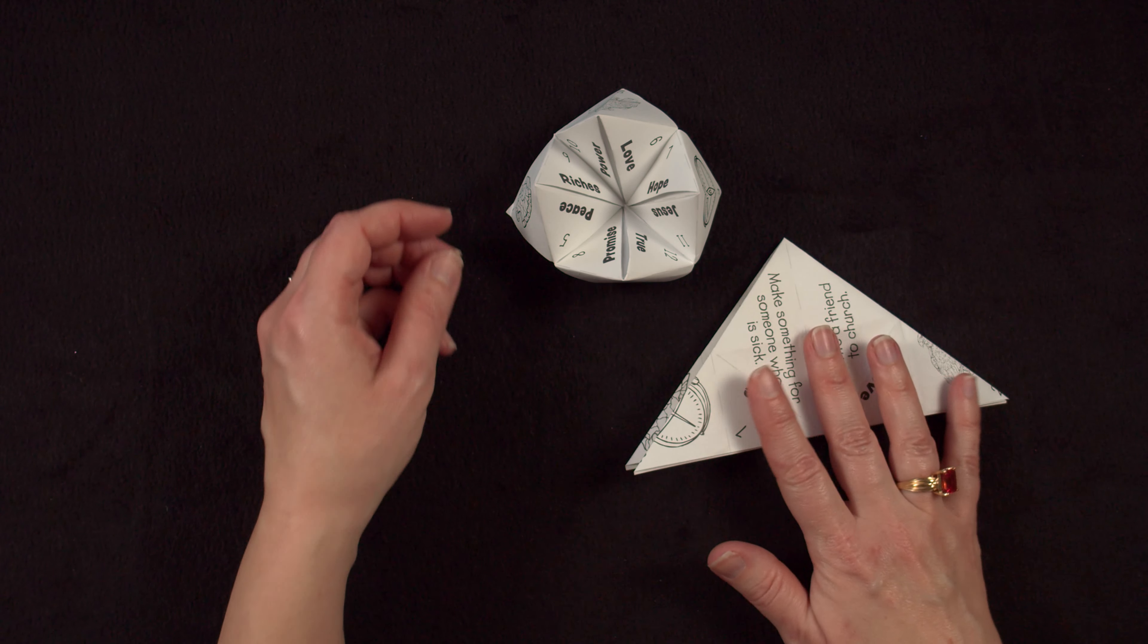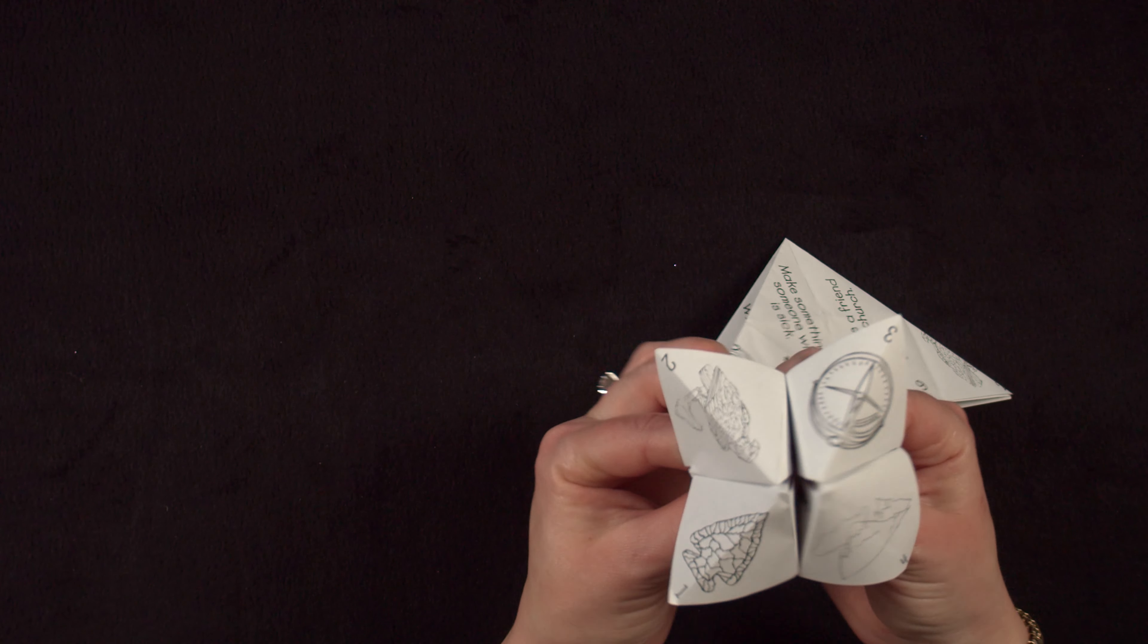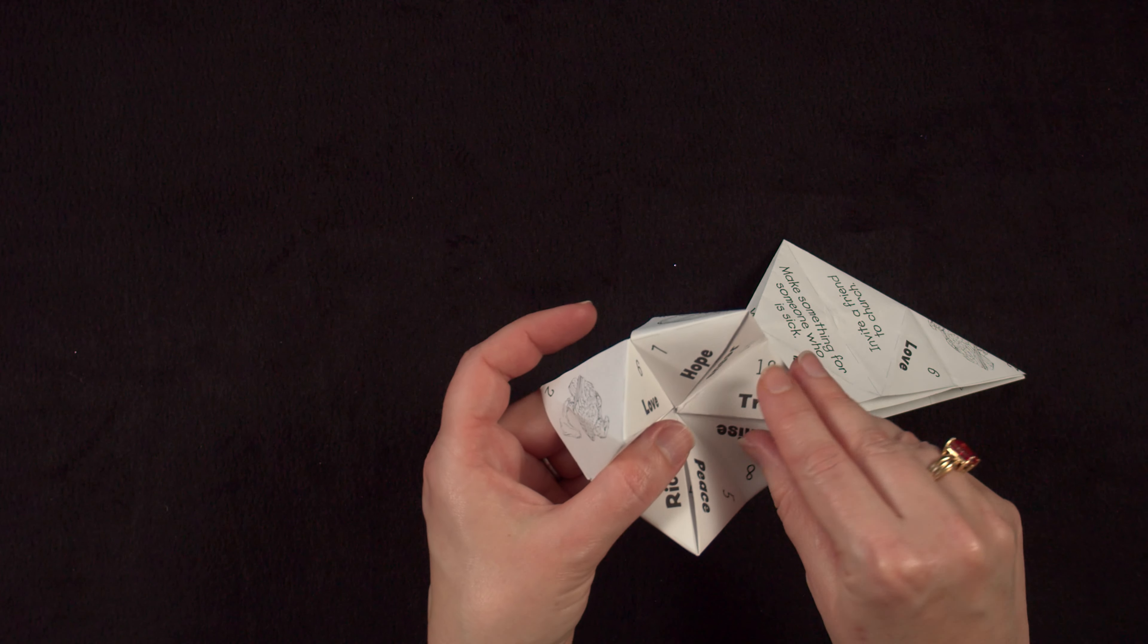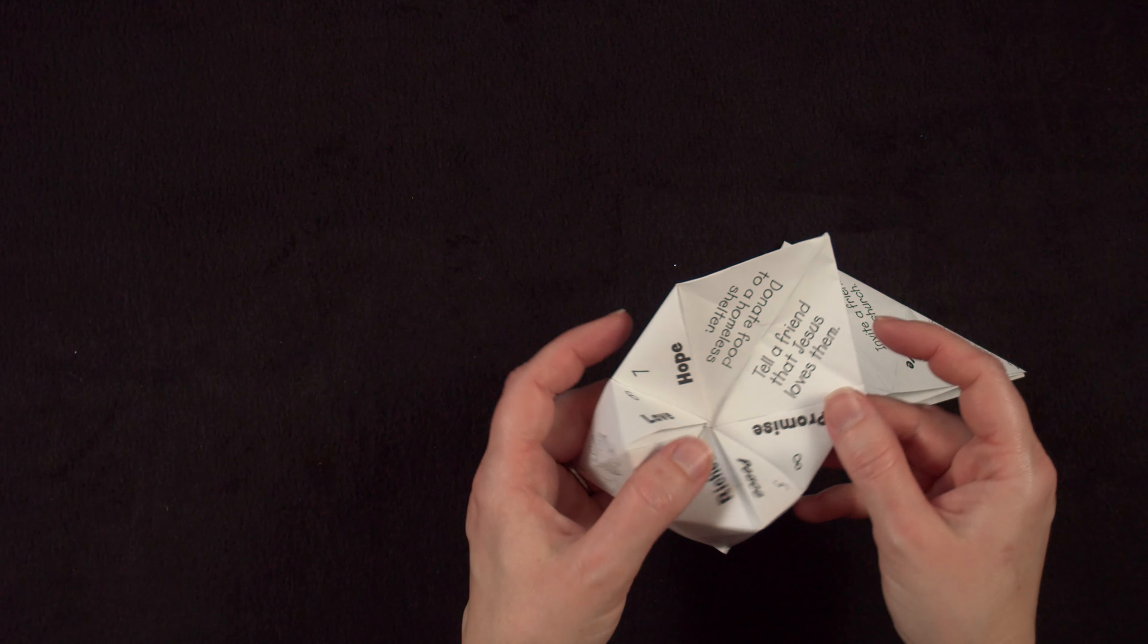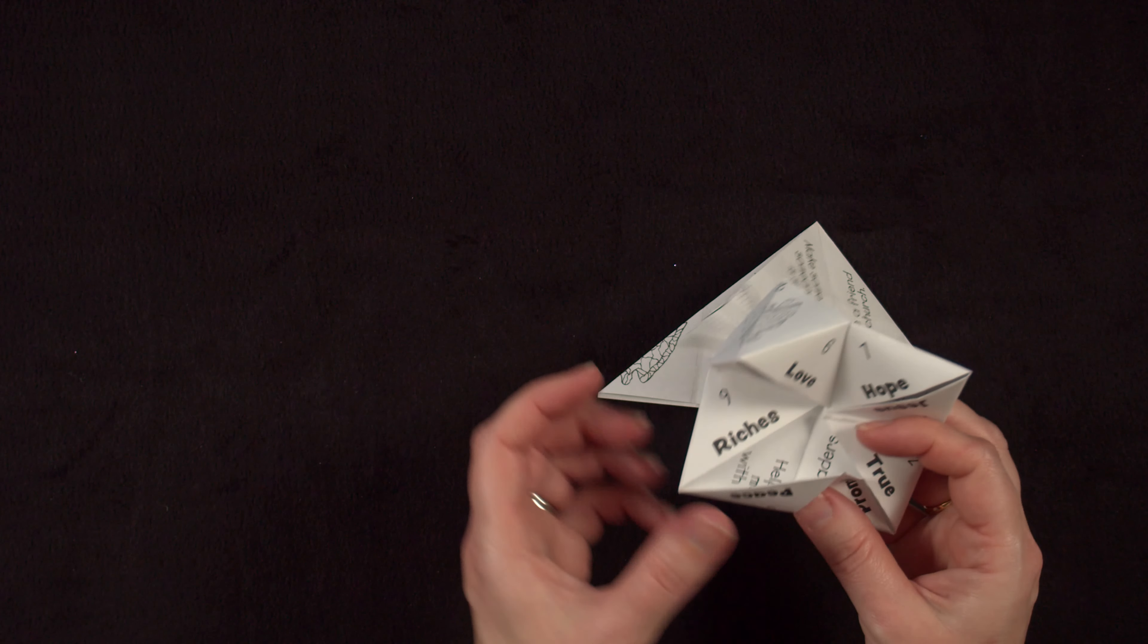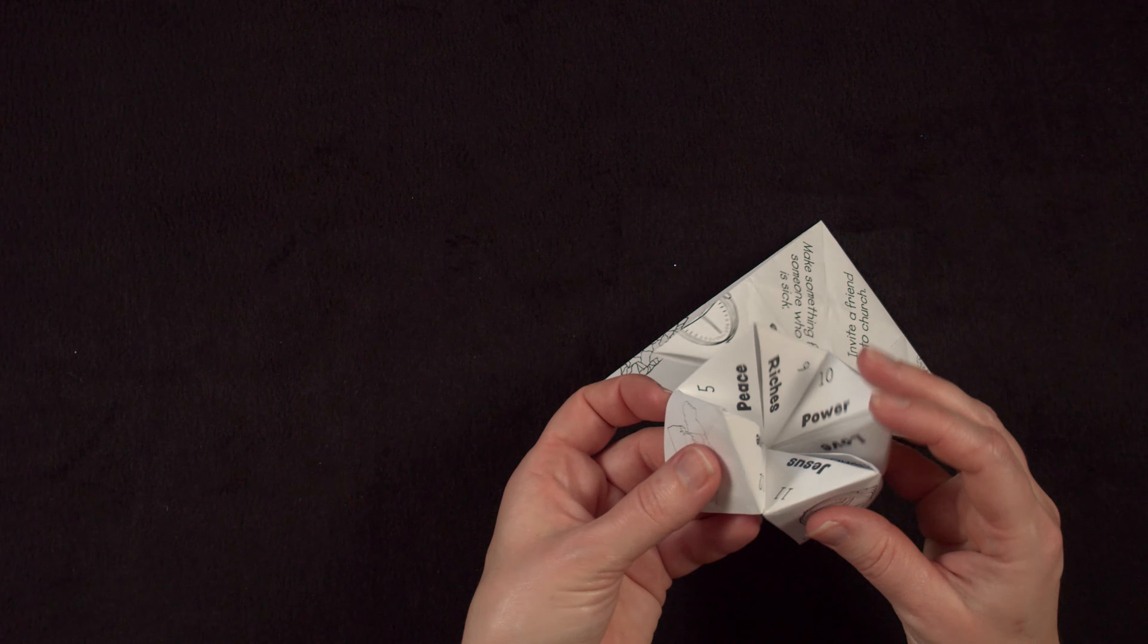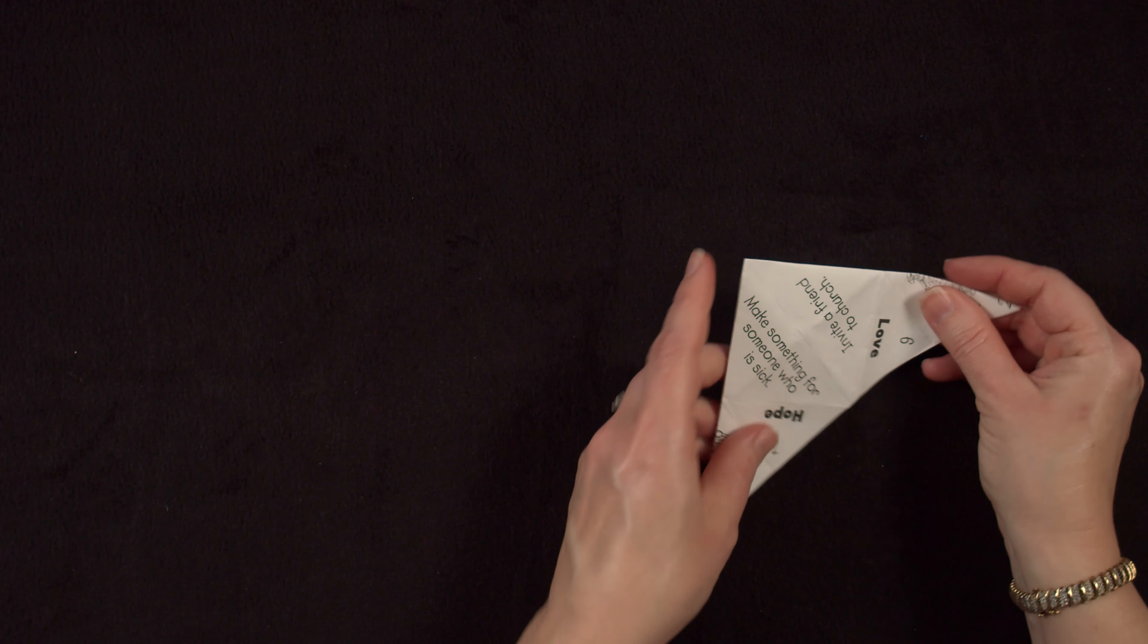So we're going to make an active origami that should look a little bit like this. Here's one that I've already completed here. And this is going to give you lots of ideas of ways that you can show others your relationship with Jesus Christ. And you'll notice there are lots of different suggestions on here of kind things you can do so you can share your love of God with others. And I'm going to show you how to make your active origami.